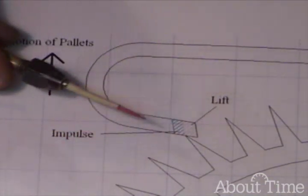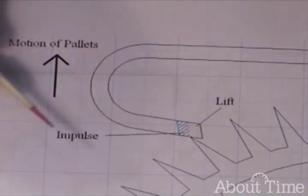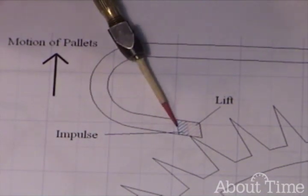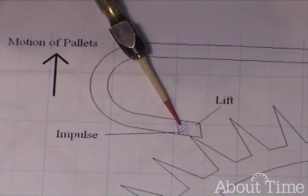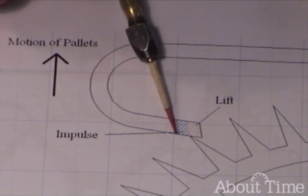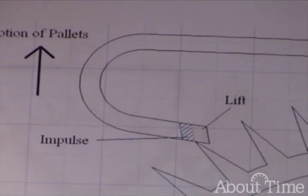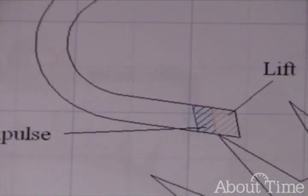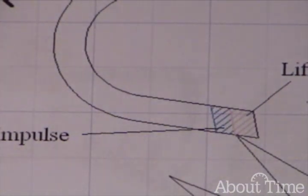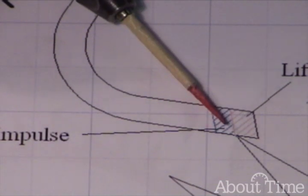Now here, the motion of the pallets have reversed direction. And these areas now are doing a different function. You're receiving impulse to the system. What was recoil is now impulse. And what was lock is now lift.